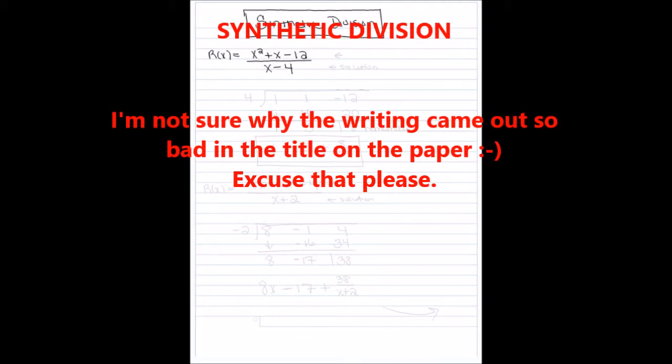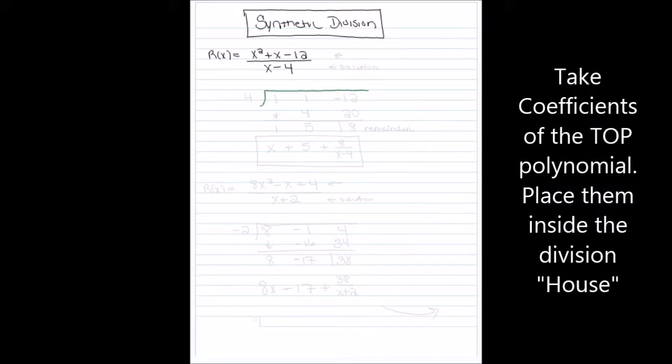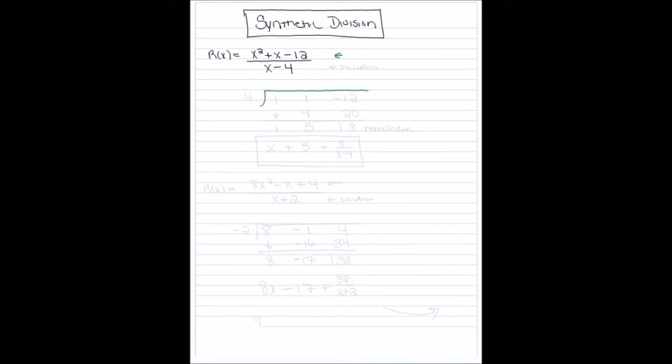Okay, synthetic division. In synthetic division, the first thing we do is take the polynomial in the numerator and only use the coefficients of each term, placing them inside the division house. So for x squared plus x minus 12, the coefficients are 1, 1, and negative 12, and I put those inside the long division symbol.